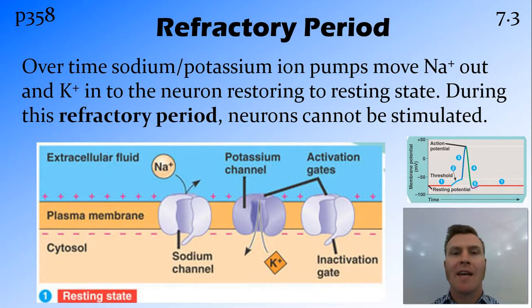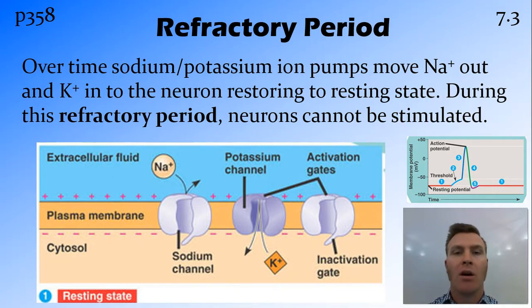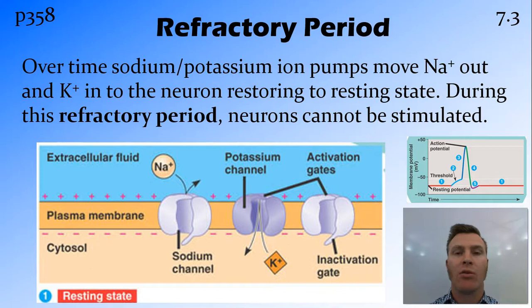After the action potential, the outside of the neuron has less sodium and more potassium than needed, while the inside has more sodium and less potassium. This discrepancy is sorted out by the sodium-potassium ion pump, which actively pumps those ions back to the correct side of the membrane — potassium to the inside and sodium to the outside — restoring the resting potential so that the neuron can be fired again.